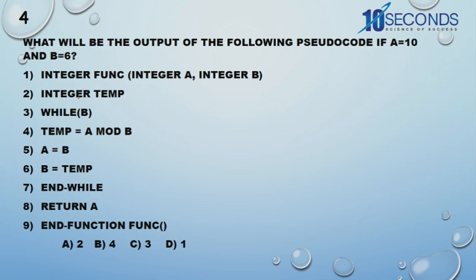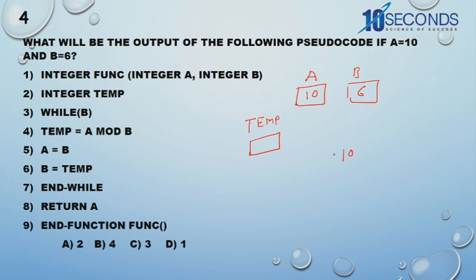Next: an integer function with integer A and integer B. Assume A equals 10 and B equals 6, with an integer variable temp. While B — while 6, the condition is true, so it enters the loop. Temp equals A modulus B: 10 modulus 6 gives remainder 4, so temp becomes 4. Then A equals B, so 6 goes to A. Then B equals temp, so 4 goes to B.